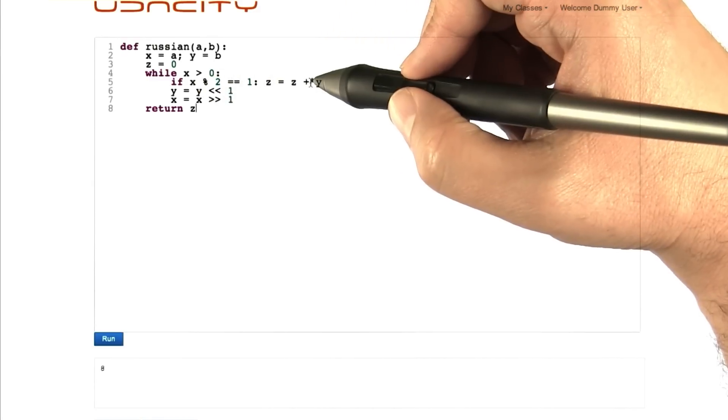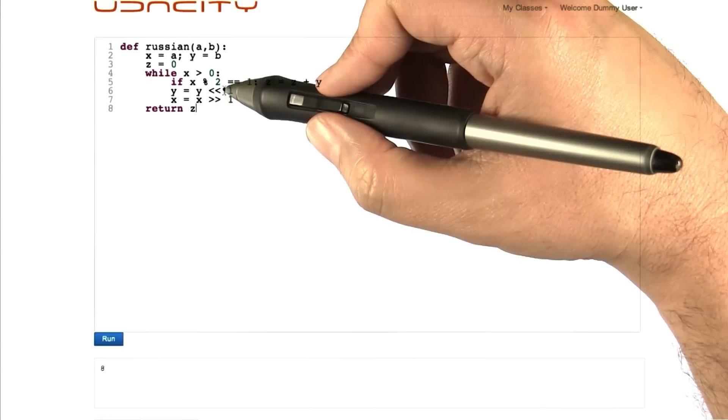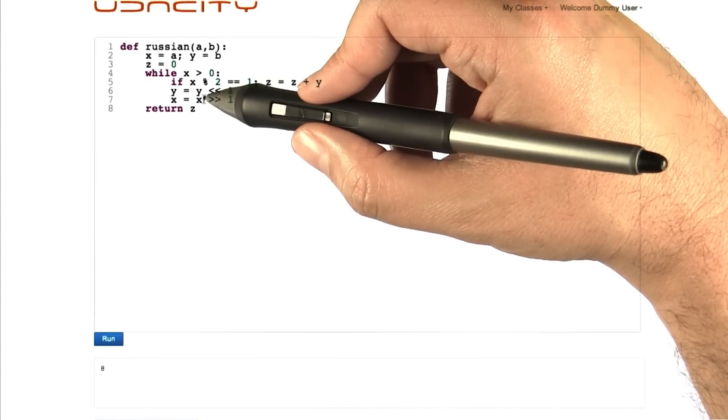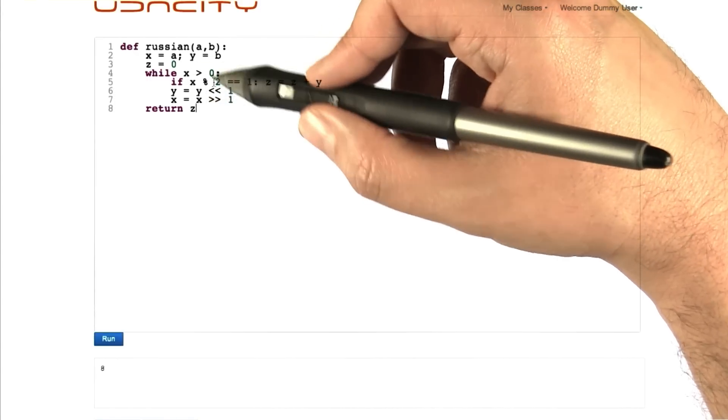So whenever x is odd, it adds y to z. Then no matter what, it doubles y, halves x, and goes back to the loop and continues doing this until x is 0.